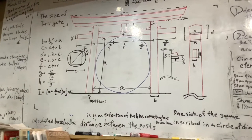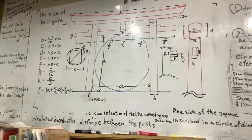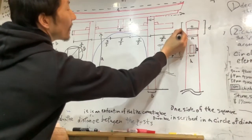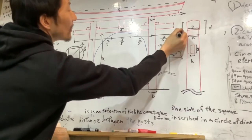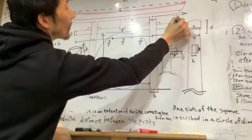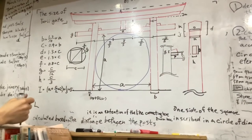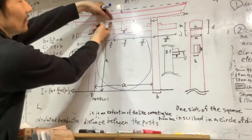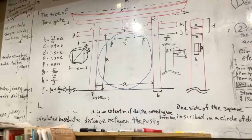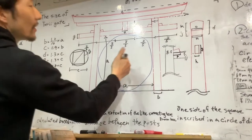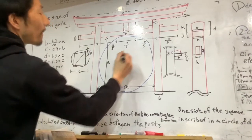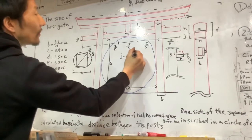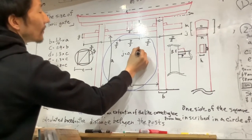H, I, J. J is this distance, this distance, so J is 0.4D.